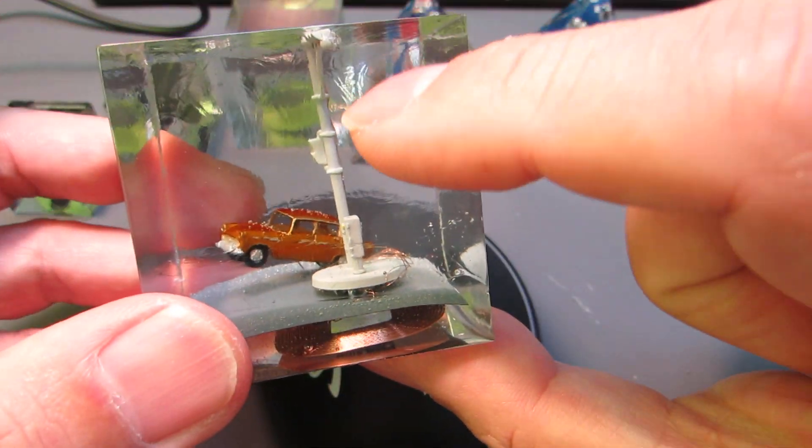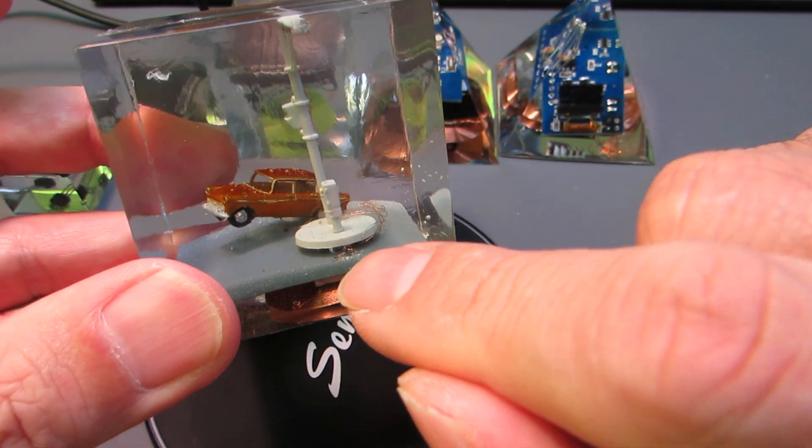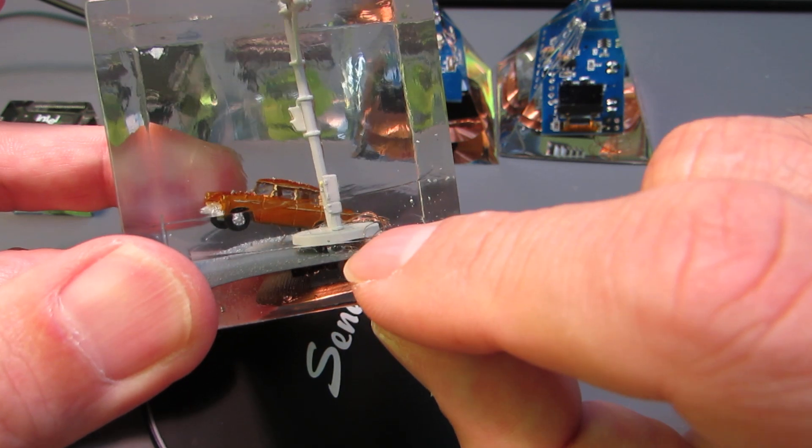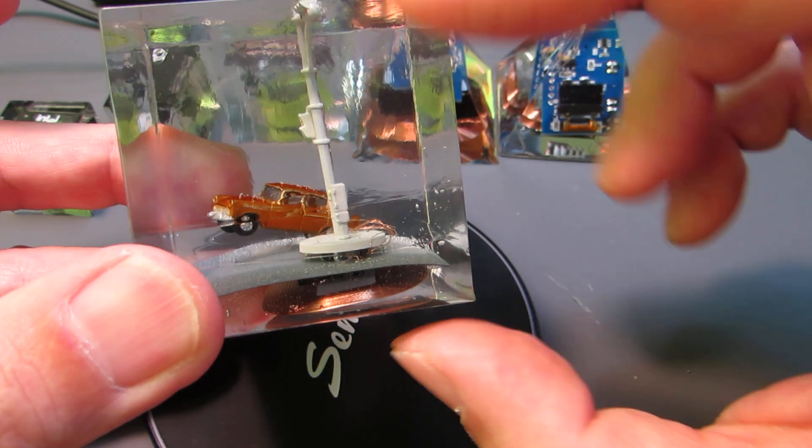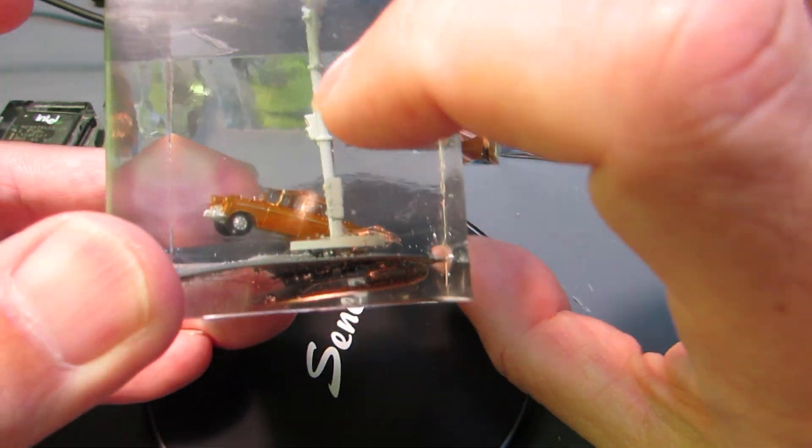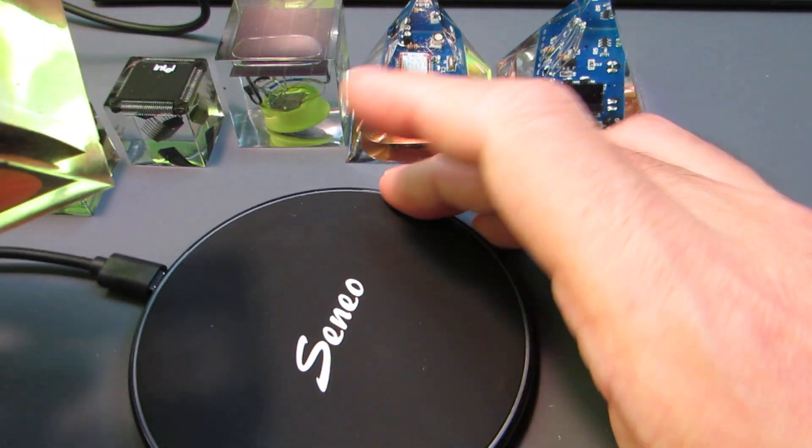Each of the light signals is controlled by the ATmega328. I put it just below the basement of the signal. It's very hard to see, very thin. And every signal is driven by the power from the Qi. Now let's see how it works.